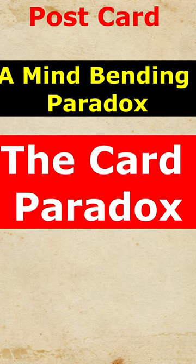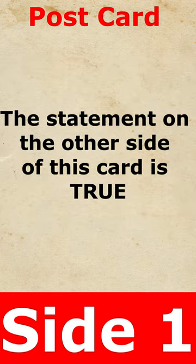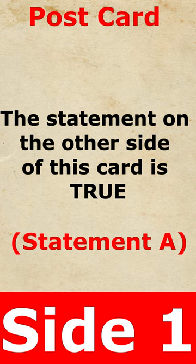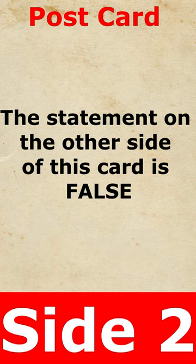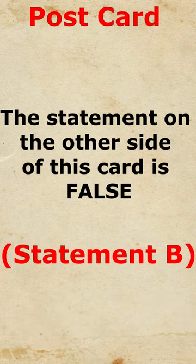Consider a scenario where you have a postcard in your hand. One side of the postcard contains the statement: 'The statement on the other side of this card is true.' Consider this as statement A. Flipping the card over reveals the opposite side, which states: 'The statement on the other side of this card is false.' Let's call this statement B.